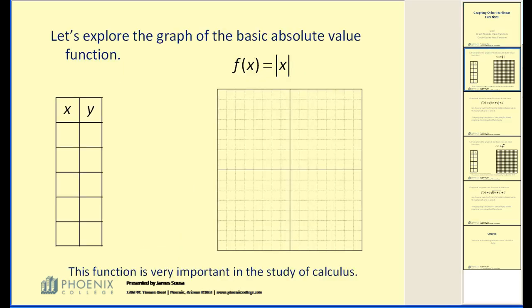Let's take a look at the most basic absolute value function, f of x equals the absolute value of x. Remember the absolute value of a number is a number's distance from zero, and distance is always positive. Let's go ahead and select some values of x to use.